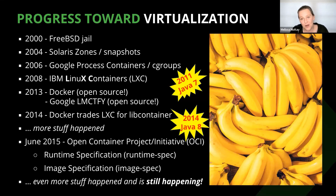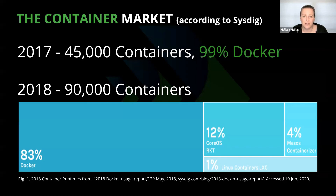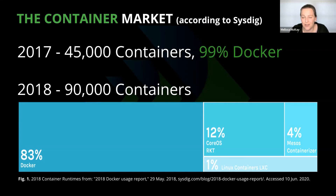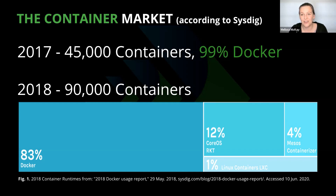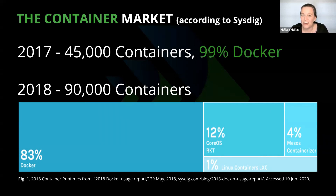Let's take a look at what's been going on in the market recently concerning container runtimes. Sysdig, a company that provides a powerful monitoring and troubleshooting tool for Linux, has put out a container report based on analysis of their own users for the last four years. In 2017, they analyzed data from 45,000 containers — 99% were Docker, so they didn't even split up the results. In 2018, they doubled the sample size: 83% Docker, 12% CoreOS Rocket containers, and a couple of others starting to sneak in.